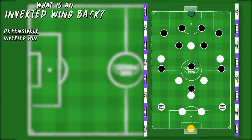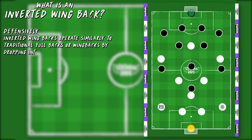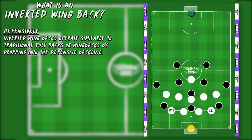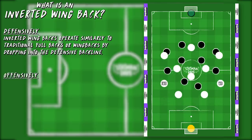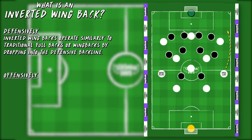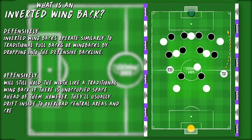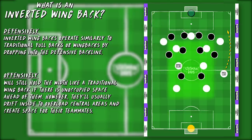Defensively, inverted wingbacks function much like a standard fullback or wingback by dropping into their backline. However, whilst the traditional fullback or wingback will offer width to an attack — usually through overlapping runs — the inverted wingback will look to drift inside and create space for players around them. If there's no teammate ahead of him on his side of the pitch, then an inverted wingback will support attacks in a more traditional manner, but when there is, they will look to affect the play in the centre of the pitch.